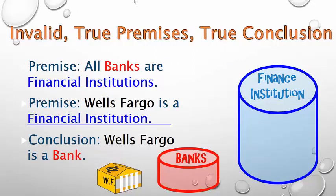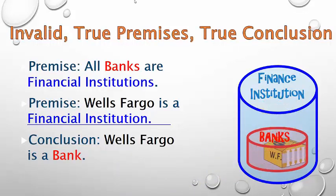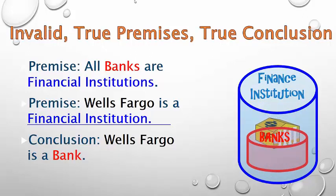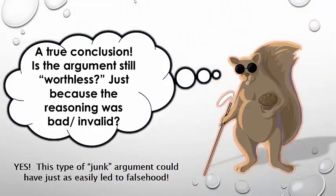Here's an argument that's invalid, but it has true premises and a true conclusion. If all banks are financial institutions — we'll put our red circle here, right within the category of the blue circle — and premise two says Wells Fargo is a financial institution, that tells us Wells Fargo goes somewhere in the blue. But does the conclusion follow that Wells Fargo is in the red bank category? That was not secured by these premises. We have a true conclusion here, but is the argument still junk because the inference was invalid? Yes. This junk argument could just as easily have led us to a falsehood in virtue of its bad form. So if it does lead us to the truth, we're in the position of the proverbial blind squirrel getting lucky and finding a nut.